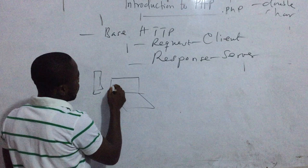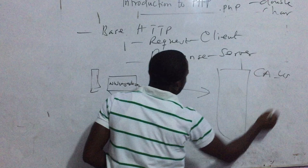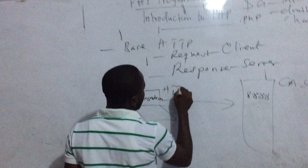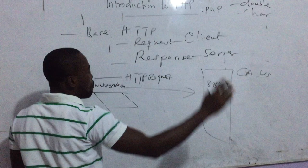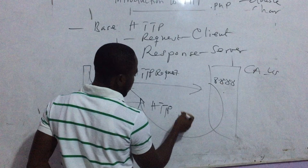When you type www.google.com in your browser, you are making an HTTP request to a server sitting in California, US — that is google.com. When the server returns the Google homepage to you, it is called an HTTP response. So PHP is mostly based on this request and response cycle, like most server-side scripting languages.